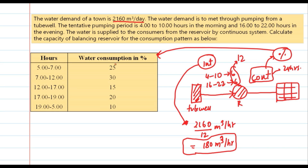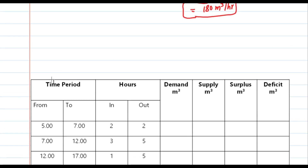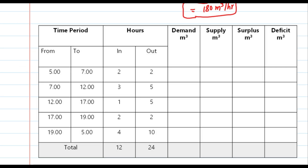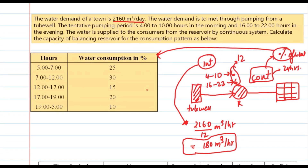In the continuous system, demand is calculated using the water consumption percentage of the total. Total demand is 2160 m³ per day. Looking at the table with time periods, for 25% it will be 0.25 × 2160 = 540. For 30% it will be 0.30 × 2160 = 648. For 15% it will be 0.15 × 2160 = 324. For 20% it will be 0.20 × 2160 = 432.